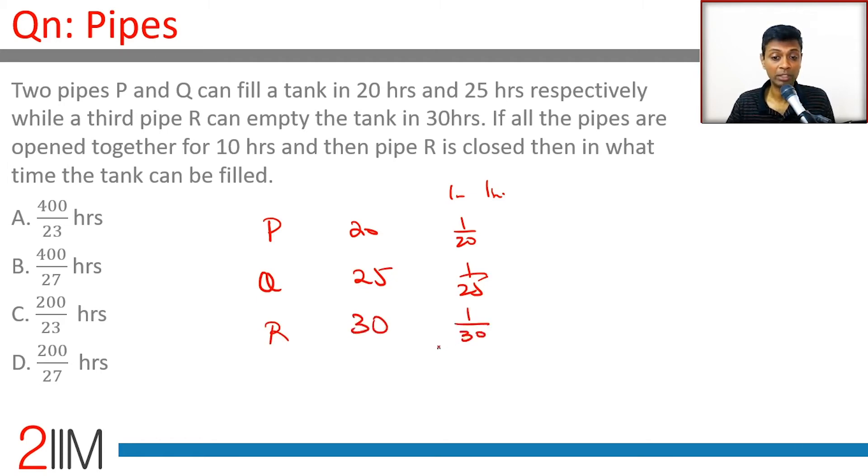This is minus because it empties. In 1 hour we'll do 1/20 plus 1/25 minus 1/30. We're doing this for 10 hours, so let's do this for 10 hours completely and then think about what is remaining.